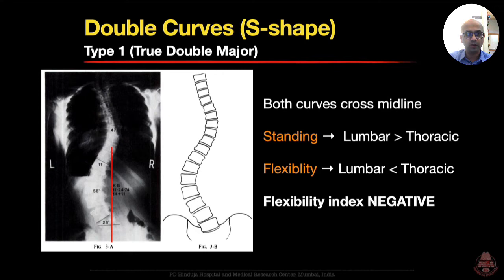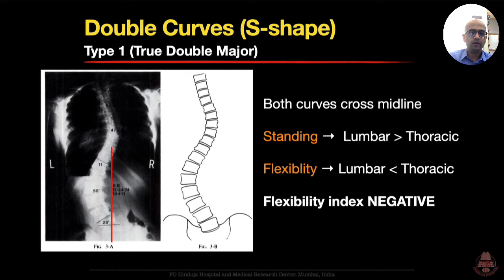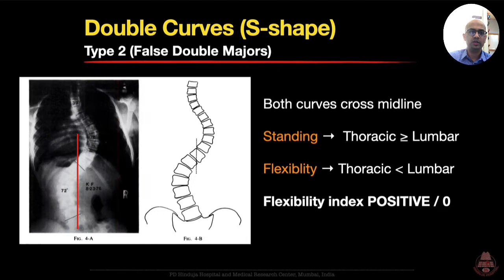The Type 1 curve was also called a true double major curve — an S-shaped curve where both curves cross the midline. On the standing x-ray, the lumbar is larger than the thoracic curve, but the lumbar is also less flexible than the thoracic, making the flexibility index negative. Looking at the example from the paper, you can see confusion because the thoracic curve is not crossing the midline. Many in the current Lenke classification might call this a Lenke 5C or 6C rather than a 3C or double major curve, illustrating the controversy from not clearly defining what it means to cross the midline.